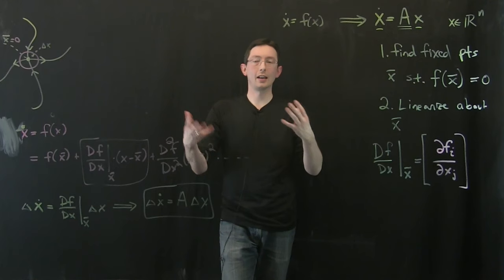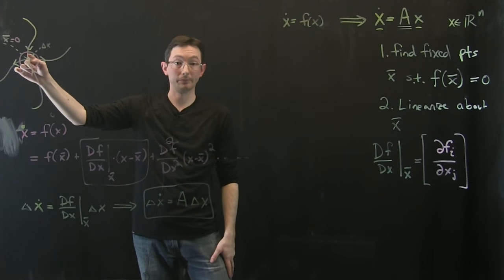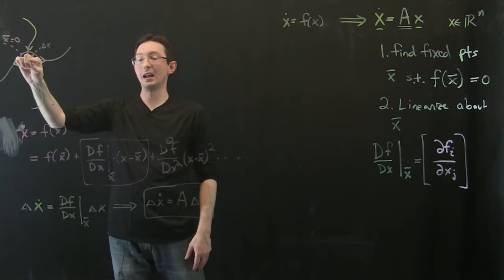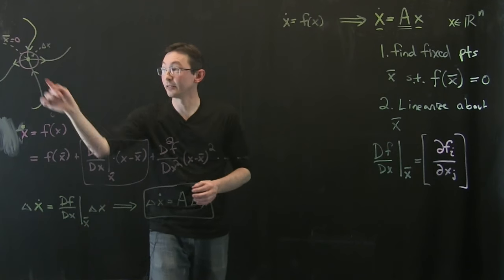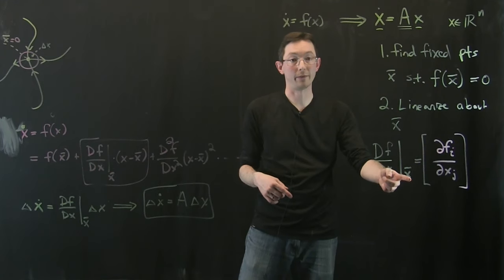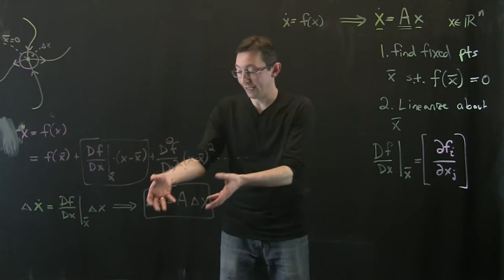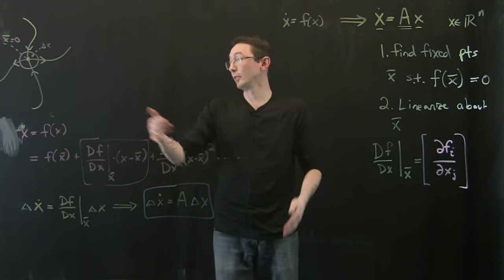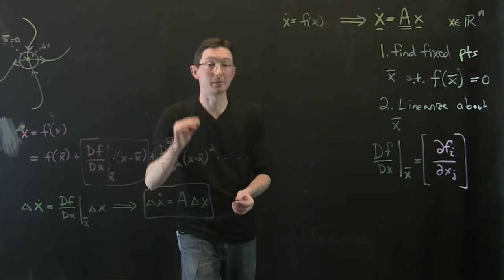I have a nonlinear system. I find the fixed points - some x-bar. I zoom in super close to that fixed point. What I find is that when I expand the dynamics, the dynamics of that little delta x near the fixed point are basically linear - given by this Jacobian of f evaluated at the fixed point. This is just a matrix of numbers, so I get delta x dot equals A times delta x. It has eigenvalues, eigenvectors, and is either stable or unstable.